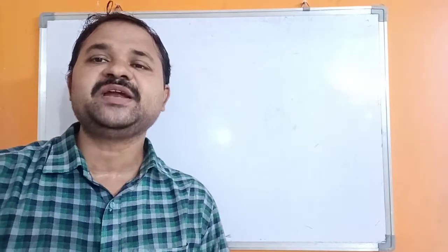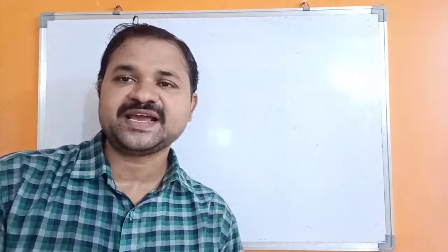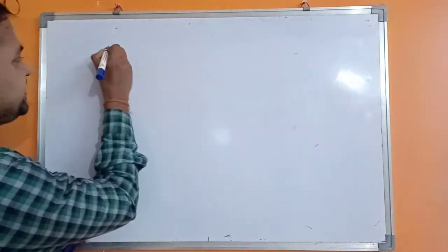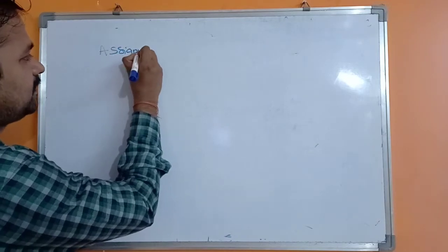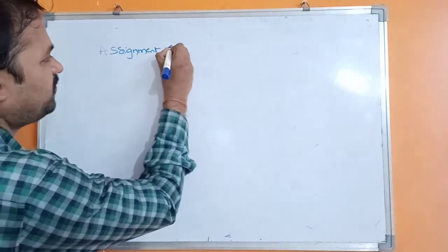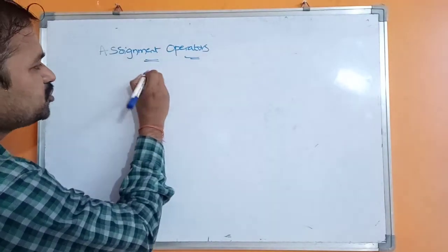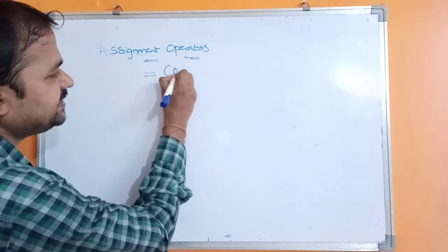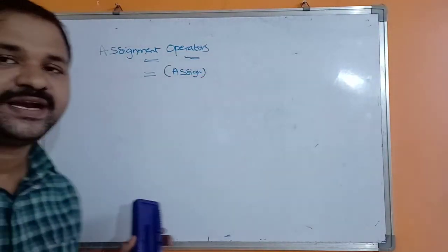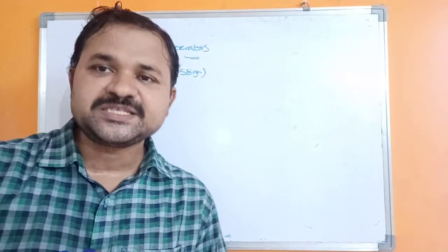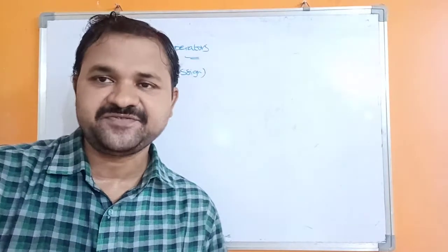Now let's see about assignment operators and unary operators in Python programming language. First, let's see about assignment operators. The most commonly used assignment operator is equal to, which is called the assignment operator. It is mainly useful in order to assign a right-hand side value to a left-hand side variable.